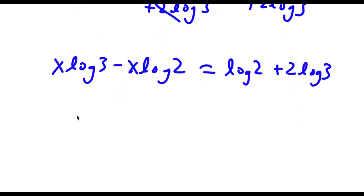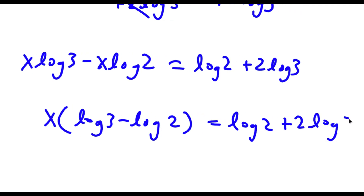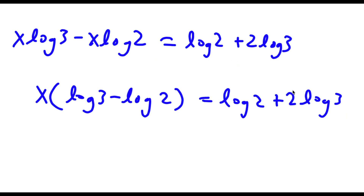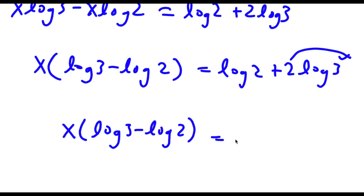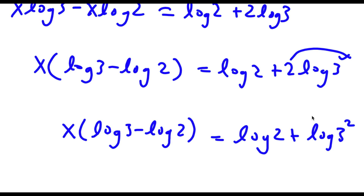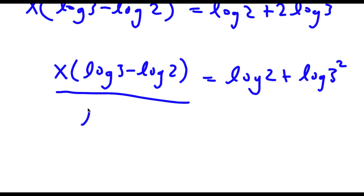Now if I factor out x from here, I have x times log 3 minus log 2 is equal to log 2 plus 2 log 3. And remember for 2 log 3, I can bring that exponent to the front, so now I have x times log 3 minus log 2 is equal to log 2 plus log 3 squared. Now if I divide both sides by log 3 minus log 2.